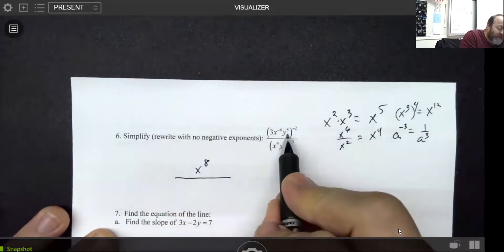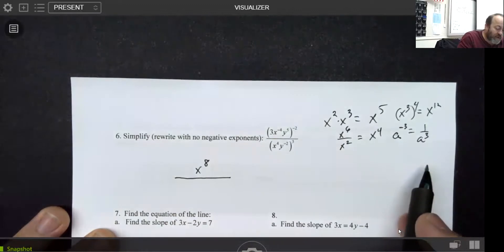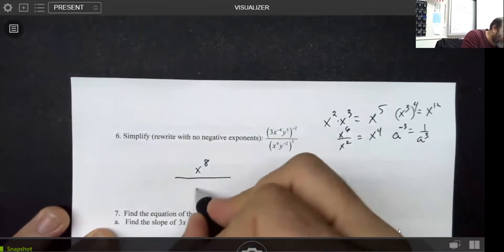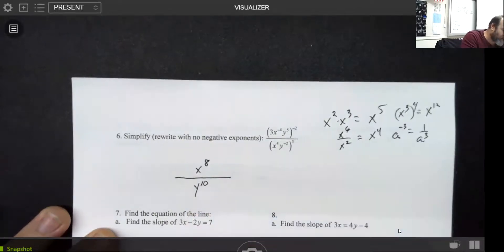Right here, I'd have y to the minus 10, but like right here, what I mentioned is if you have y to the minus 10 that is on top, I'm actually going to put that y to the tenth in the bottom. That's these two pieces.